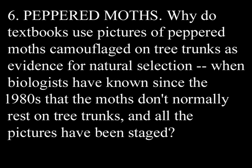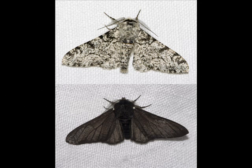Number 6: Peppered Moths. Why do textbooks use pictures of peppered moths camouflaged on tree trunks as evidence for natural selection, when biologists have known since the 1980s that the moths don't normally rest on tree trunks and all the pictures have been staged? I'm going to completely call bullshit on this one — it is a fraud, that is a lie, it is completely facetious. This is a picture of the two color morphs of the peppered moth: above is the white variety and below is the black variety. In nature, as far back as we can remember, the white variety had always been more common.